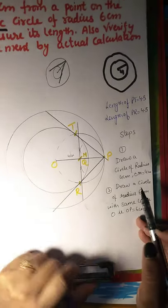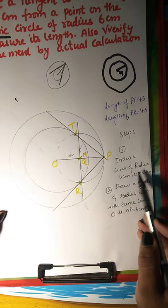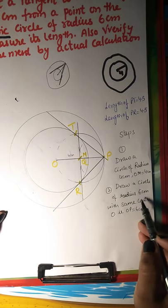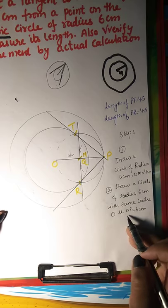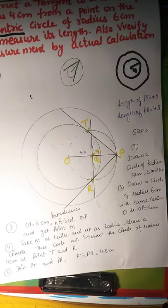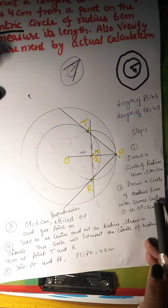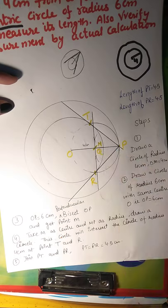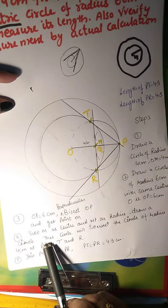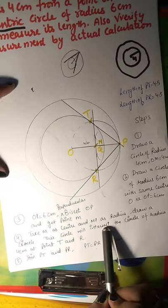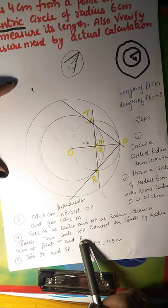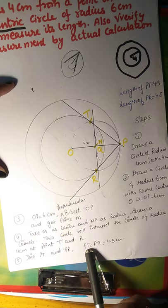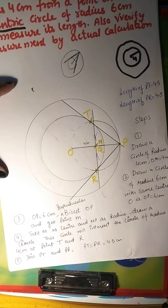So please note down the steps of constructions. First of all draw a circle of radius 4 cm, that is OM equals to 4 cm. Next step is draw a circle of radius 6 cm with same center O, that is OP equals to 6 cm. Then your third step is OP 6 cm perpendicular, bisect OP and get the point M. Fourth point is take M as center and MP as radius, draw a circle. This circle will intersect the circle of radius 4 cm at point T and R. Join PT and PR. PT equals to PR equals to 4.5.